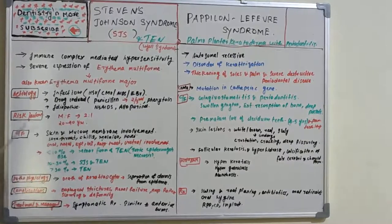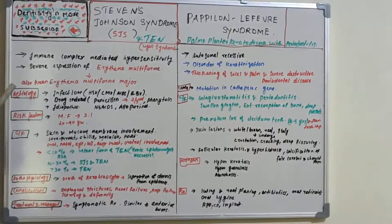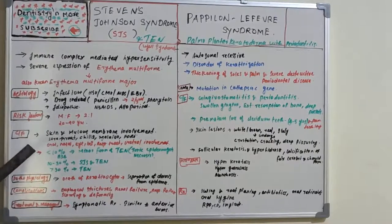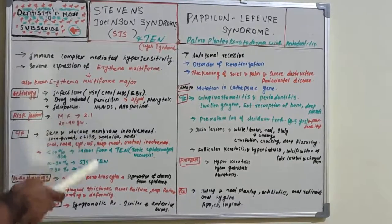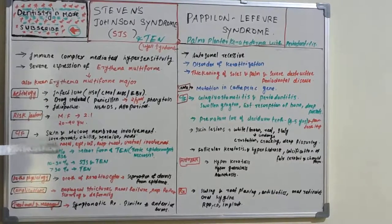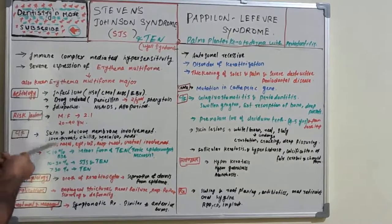Mucocutaneous lesions develop abruptly in clusters, lasting two to four weeks, and are typically non-pruritic. Fever is present in approximately 85% of cases. Involvement of oral and mucous membranes may be severe enough that the patient cannot eat or drink. Conjunctivitis is common, and patients with genitourinary involvement may experience dysuria or inability to void.